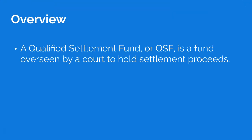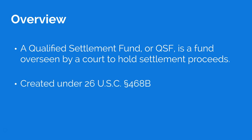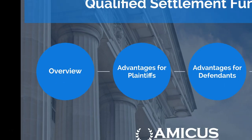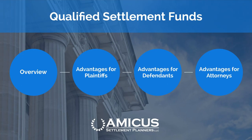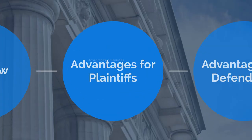This is a general overview. A Qualified Settlement Fund is a fund or an account, essentially, that is overseen by a court to hold settlement proceeds. It's established in the United States Code under Section 468B, and it's been around since the late 1970s. They were initially contemplated for multiple claimant settlements or mass tort type settlements, but they can be used in single event cases just as easily.